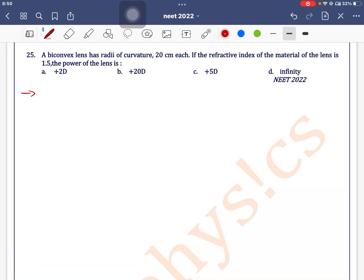A biconvex lens has a radius of curvature 20 centimeter each. We have a biconvex lens here whose radius of curvature is 20 centimeter, this is r, this is r which is equal to 20 centimeter. Refractive index is 1.5.